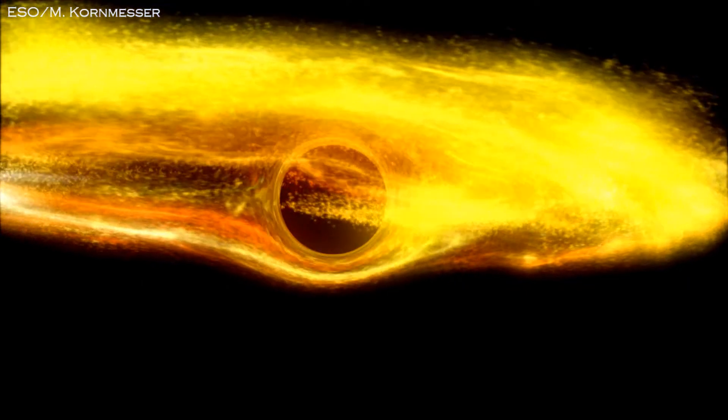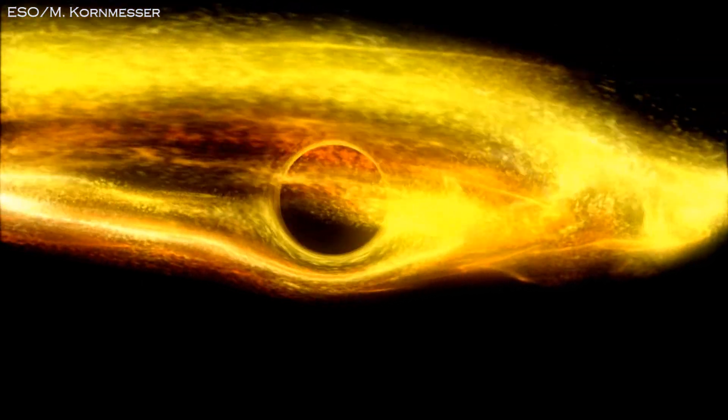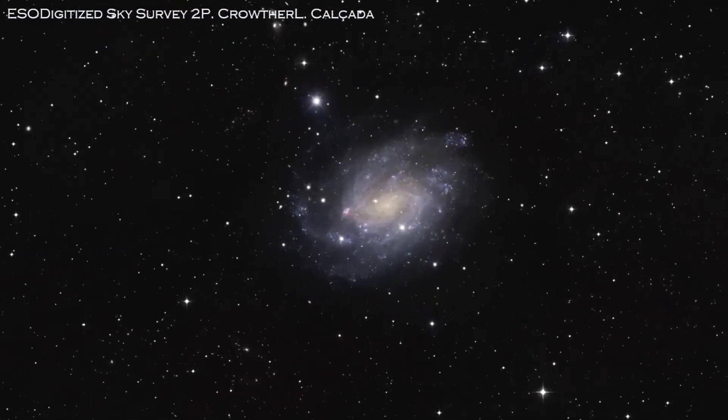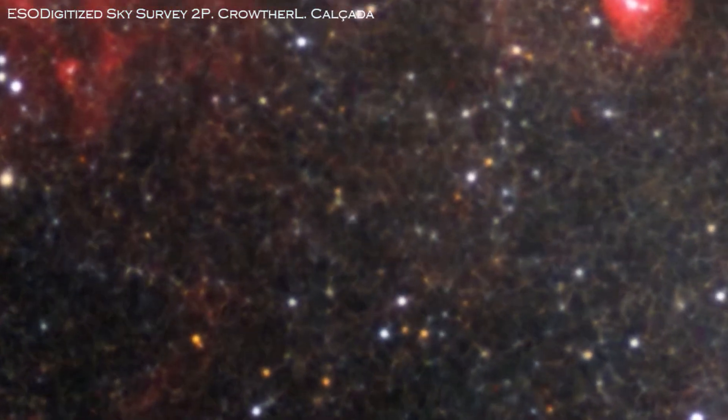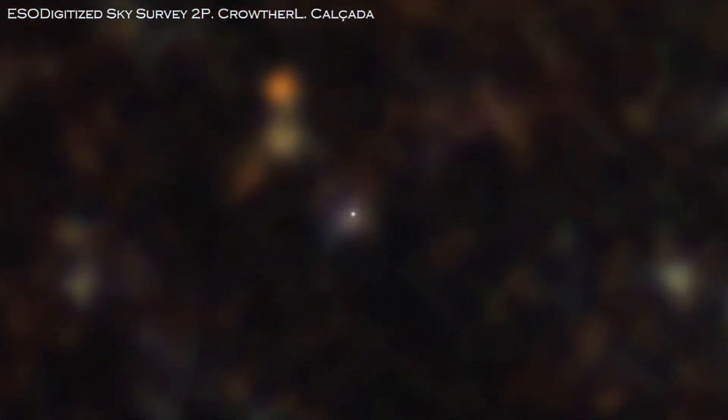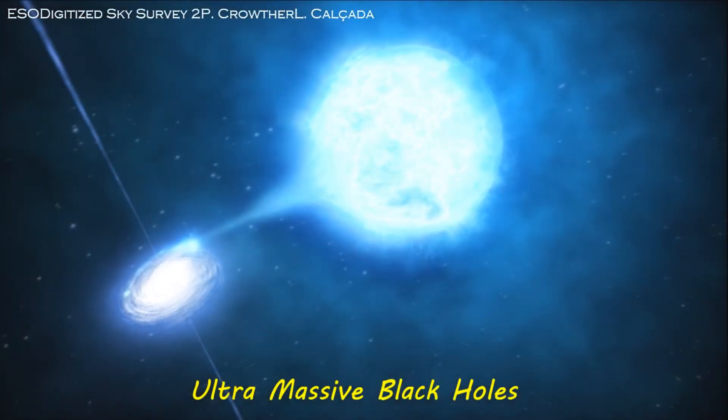TON 618 lies 10 billion light years away from the Earth. It is equal to 66 billion suns. Sun is not even a small dot as compared to TON 618, which ultimately puts this black hole into the category of the fifth category of black hole, which I haven't mentioned on my Instagram. It's called ultra massive black hole.